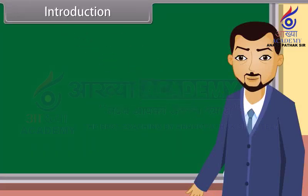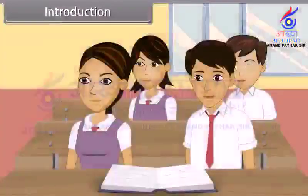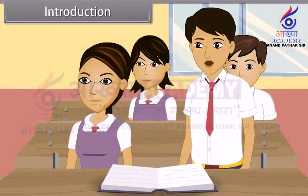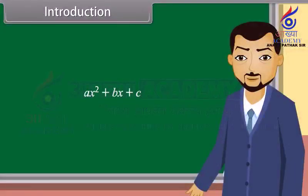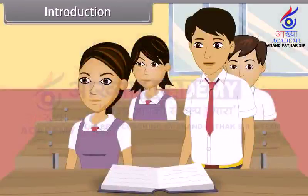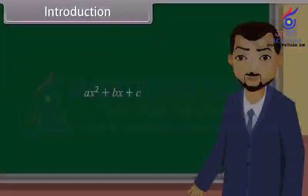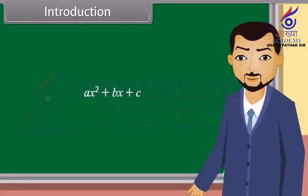Students, do you know what polynomials are? A polynomial is an expression of more than two algebraic terms. Can you tell which type of polynomial is this? Is it a quadratic polynomial? Correct. This is a quadratic polynomial. When we equate this polynomial to zero, we get a quadratic equation. Today we will learn about quadratic equations.